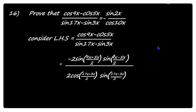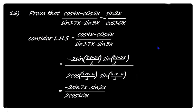The next step is simplification. The numerator becomes minus 2 sin((9x+5x)/2) = sin 7x, and sin((9x-5x)/2) = sin 2x. In the denominator, (17x+3x)/2 = 10x, giving 2 cos 10x, and (17x-3x)/2 = 7x, giving sin 7x.